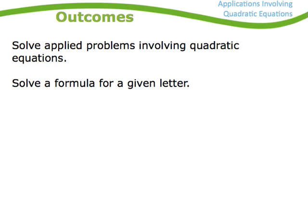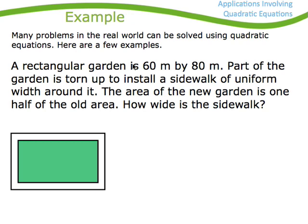Here's an interesting question, and some that I'm sure you've all done in your backyards. Like I say at the top there, there's lots and lots of real-world problems that we can use quadratic equations to solve. Rectangular garden, 60 meters by 80 meters. That's a nice big garden. Part of the garden is torn up to install a sidewalk that goes around it that has a uniform width.